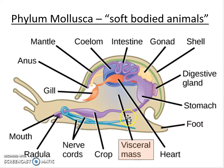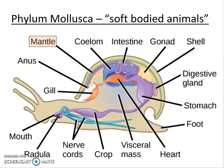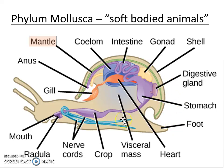Another interesting feature is that they form what's known as a visceral mass, which contains most of their internal organs inside those soft bodies. Some of them form a protective layer around the visceral mass called a dorsal mantle — a flap of tissue on the dorsal side, similar to a dorsal fin on a shark. A lot of times the mantle actually secretes a hard shell, as seen in our example, the snail, which has that shell to protect the visceral mass and internal organs.